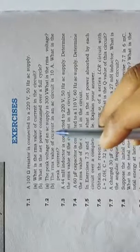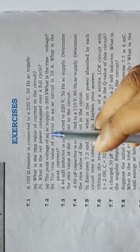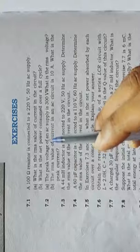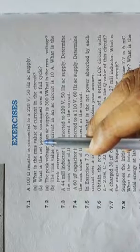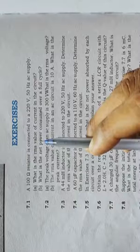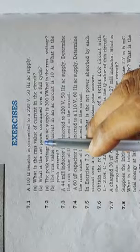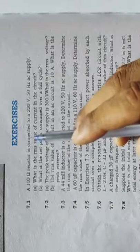As you know, in yesterday's class, the theoretical portion of chapter number 7, alternating current, had completed. Today we will solve the chapter exercise.